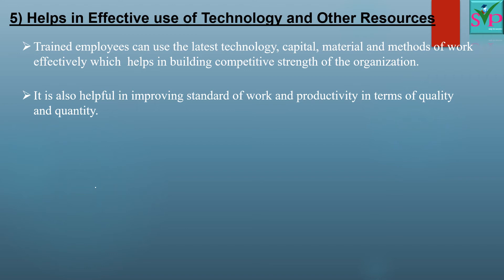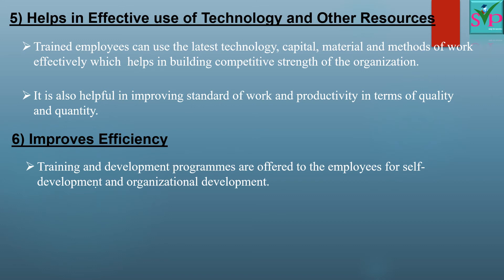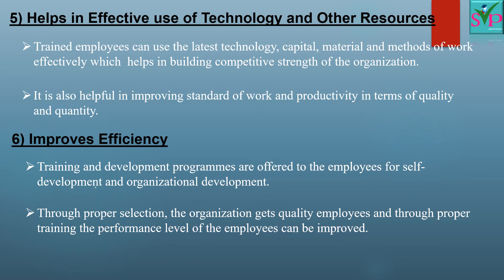Standard method of work and updated technology improves the quality and quantity of production. Point 6: Improves efficiency. Training and development programs are offered to employees for self-development and organizational development. Through proper selection, the organization gets quality employees, and through proper training, the performance level of employees can be improved. Employees are given continuous training about new technology to improve their performance. Proper selection gives quality employees, and with training, their performance level gets improved. If all employees are efficient, the organization also becomes efficient and leads to growth and success.